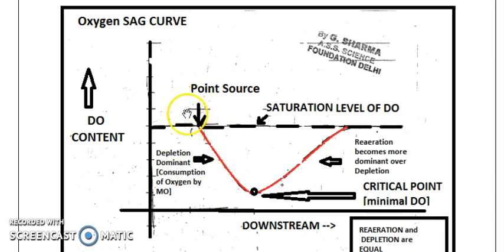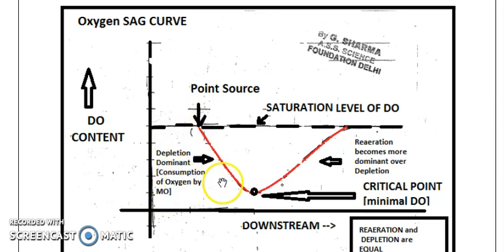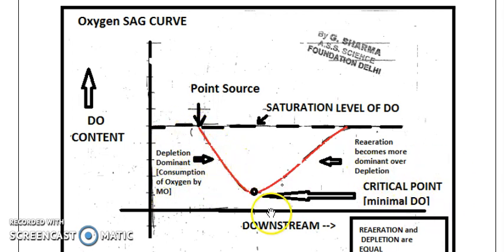Looking at the left half before the critical point: at the point source there will be very low DO and very high BOD. What happens here is depletion due to consumption of oxygen by microorganisms, because BOD is higher and depletion is the dominant process over reaeration. At the critical point, DO is at its minimum and reaeration is approximately equal to depletion.